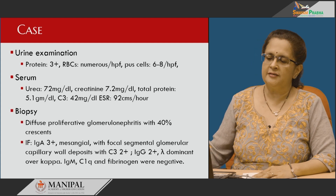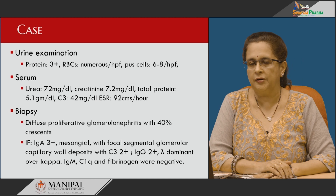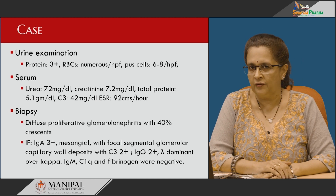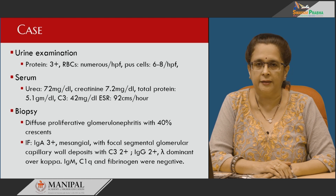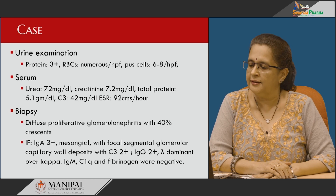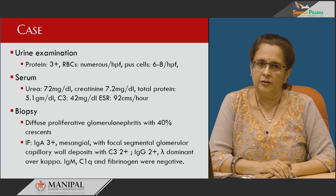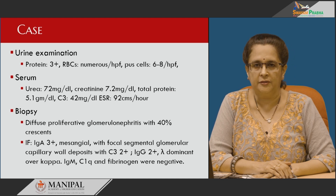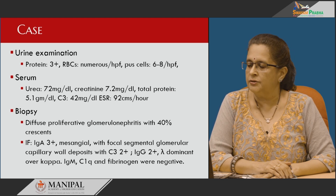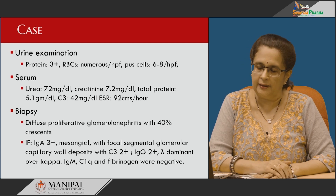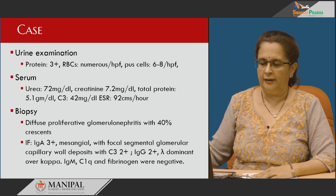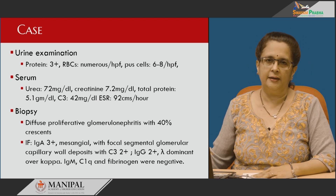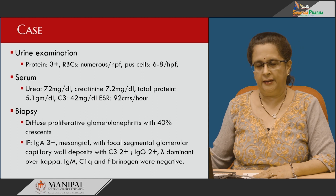The biopsy showed diffuse proliferative glomerulonephritis with 40 percent crescents, and immunofluorescence depicted IgA dominant deposits especially in the mesangium with focal segmental glomerular capillary wall deposits. C3 was 2 plus along with IgG and it was lambda dominant over kappa. IgM, C1Q, as well as fibrinogen were negative. This was diagnosed to be a case of IgA nephropathy.